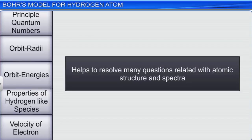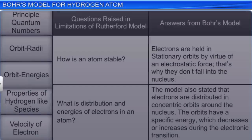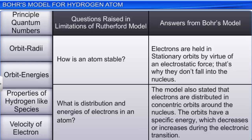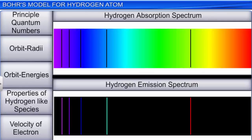Although Bohr's theory is not based on modern quantum mechanics, it helps to resolve many questions related with atomic structure and spectra. For example, it provides explanation for the main limitation of Rutherford's model — the stability of an atom. According to Bohr's model, electrons are held in stationary orbits by virtue of an electrostatic force, which is why they don't fall into the nucleus. The model also stated that electrons are distributed in concentric orbits around the nucleus, and the orbits have specific energy which decreases or increases during electronic transition. It also helps to quantitatively explain the emission and absorption line spectra of hydrogen and hydrogen-like species.